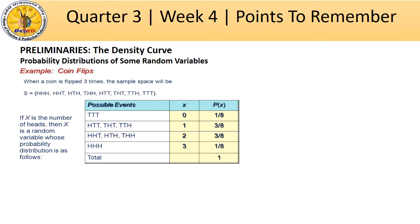The remaining outcomes are HTH, THH, HTT, THT, TTH, and TTT. So if X is a random variable representing the number of heads, then the value for TTT is 0. The value for HTT, THT, and TTH is 1. Take note that we are only counting the number of heads in the three coin flips. And 2 for HHT and HTH, and 3 for HHH.